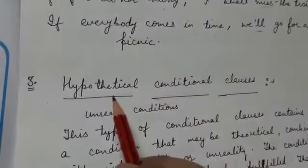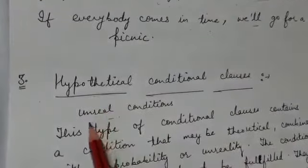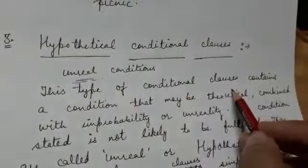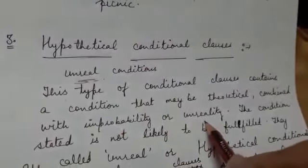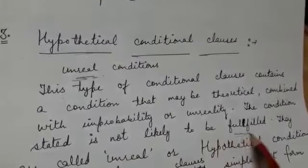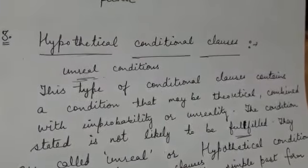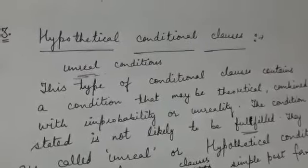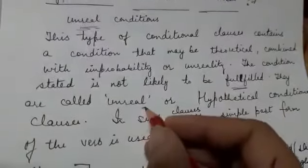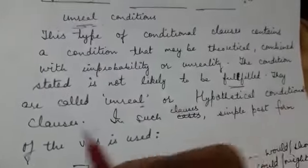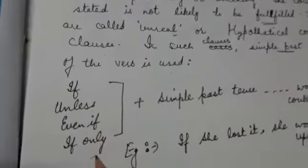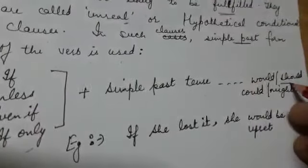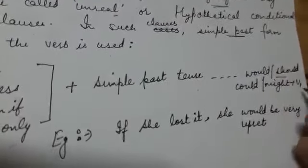Next is the third type: hypothetical conditional clauses. Hypothetical means unreal — jo cheezein unreal hain. This type contains a condition that may be theoretical, combined with improbability or unreality. The condition stated is not likely to be fulfilled — woh condition improbable hai, puri ho hi nahi sakti. In the if clause, simple past form of verb is used. In the main clause, we use would, should, could, might, or verb's first form.